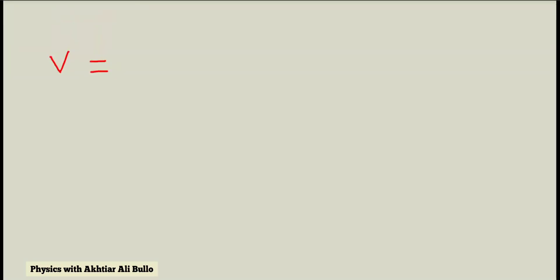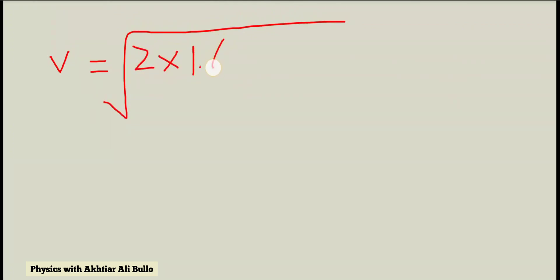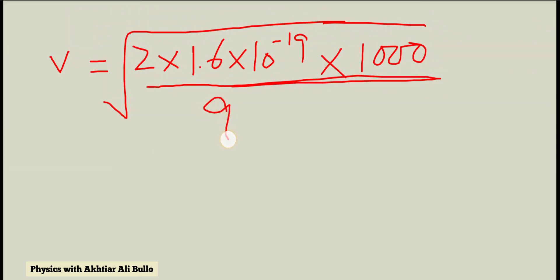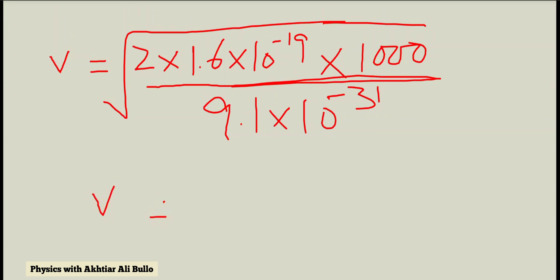Putting in the given values: v = √(2 × 1.6×10⁻¹⁹ × 1000 / 9.1×10⁻³¹ kg). After simplifying this expression, we get the answer as 1.9×10⁷ m/s.